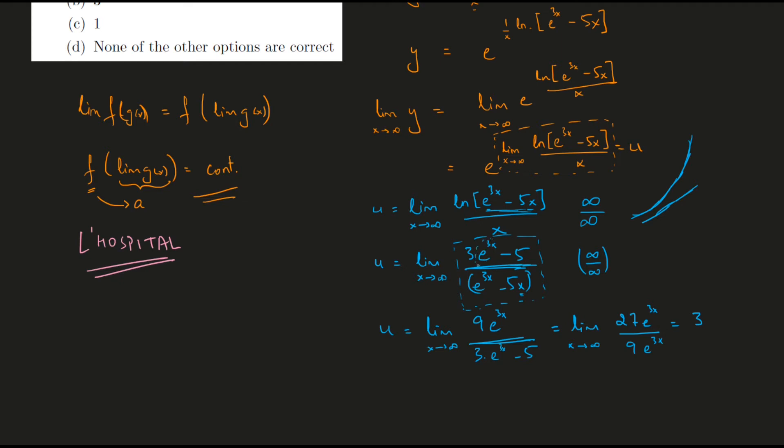So exponential would always remain while the linear terms would ultimately vanish out. And that's why I knew that if I keep applying L'Hospital, I would get to the answer. And so the answer is y equals e to the power of 3—that is option a.